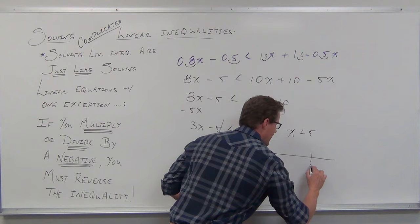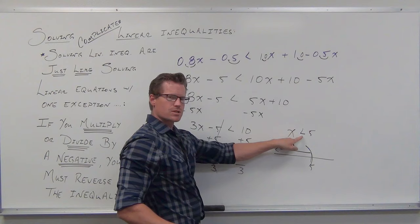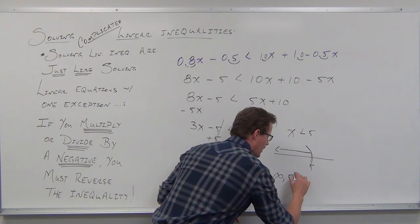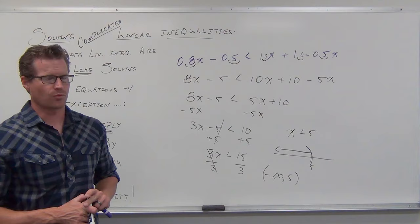Put that on a number line — our variable is on the left-hand side, it points in the direction we should be graphing. The lack of an equal sign says you cannot include the number that makes both sides equal in your solution set, so we use parentheses. Reading from left to right: starting at negative infinity, ending at positive 5, using parentheses to represent the interval.